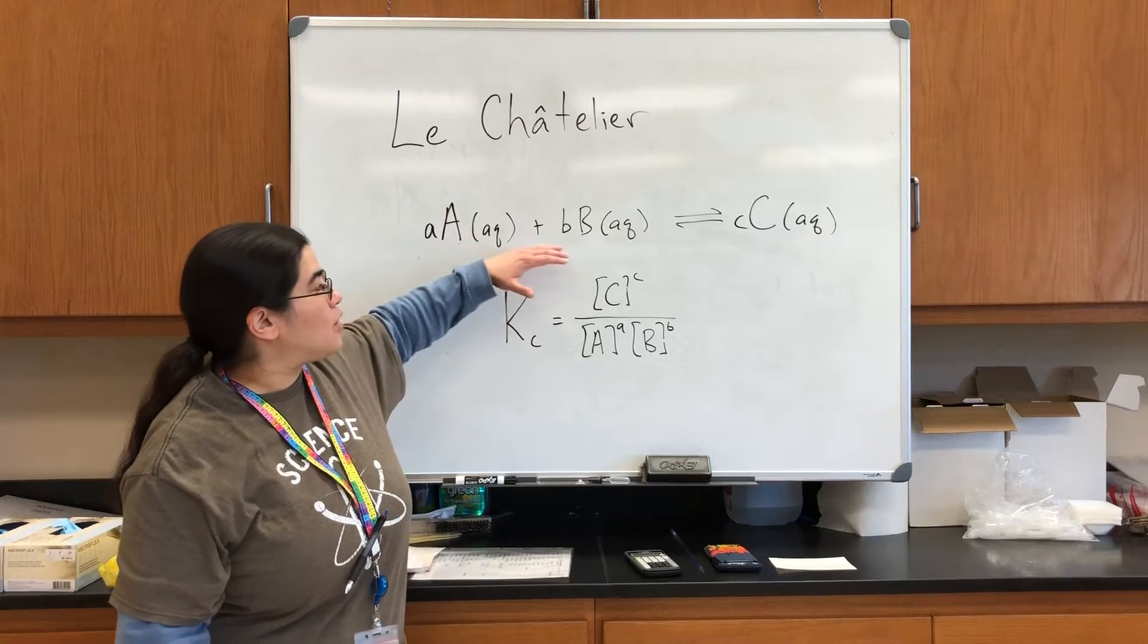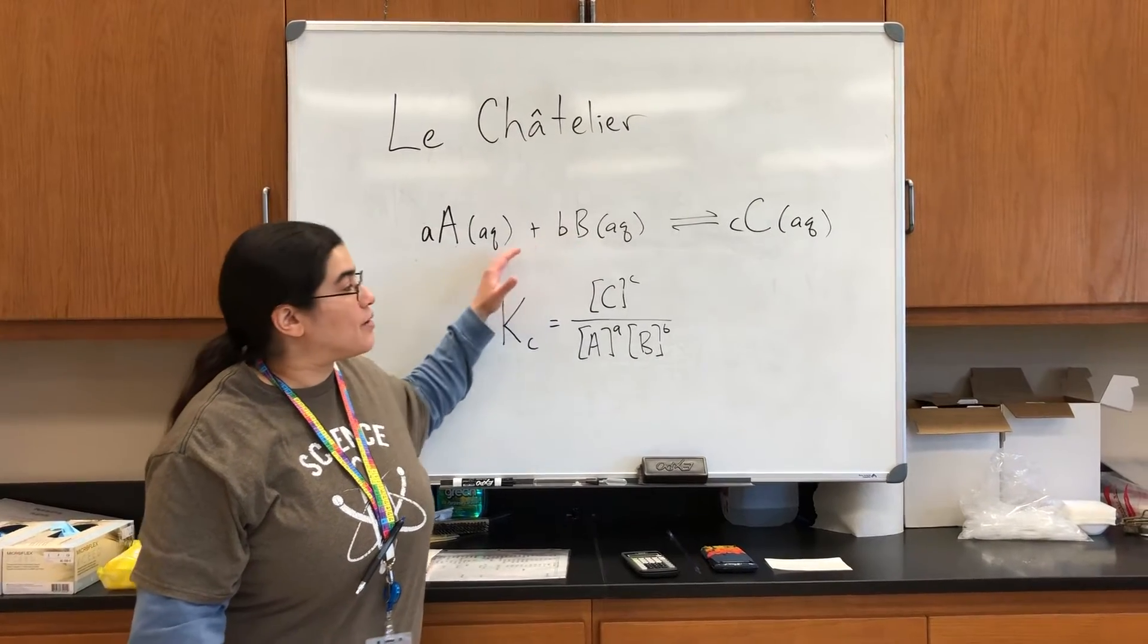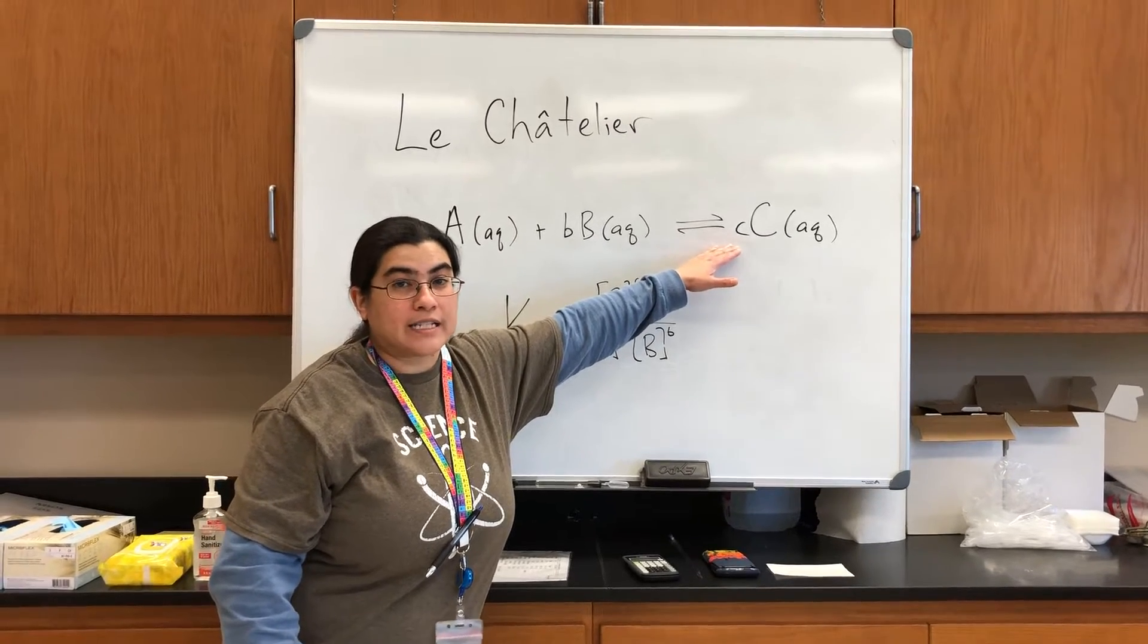So for instance, if you start adding one of the reactants, like maybe B, it's going to shift the equilibrium to form more of your product C.